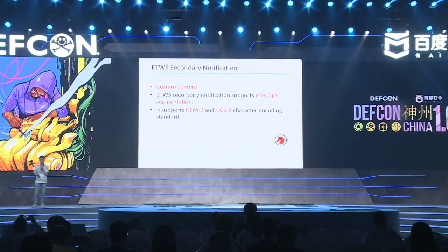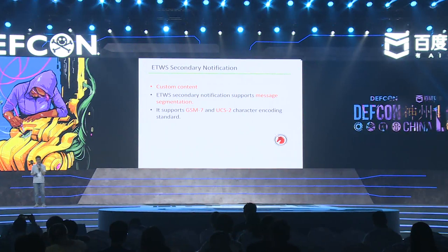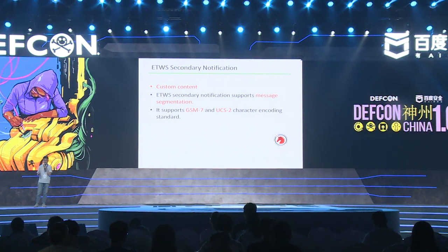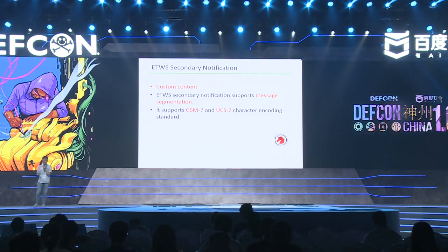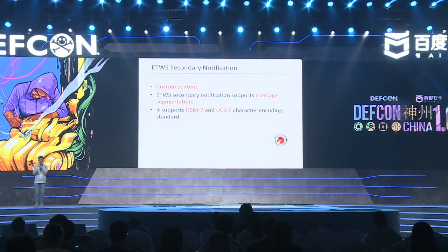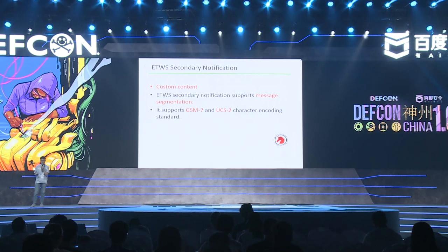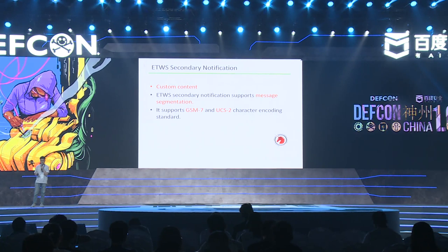The secondary notification can customize the content, and it also supports segmentation when the warning message is too large. It also supports multiple languages — both Chinese and English. We can use GSM7 encoding to send English messages and UCS2 encoding to send Chinese warning messages.